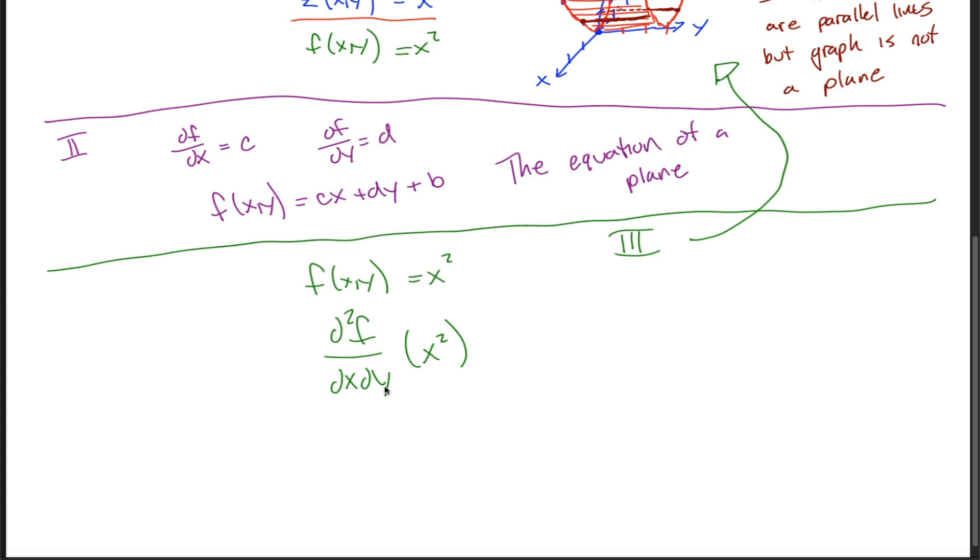we first take the derivative with respect to y. With respect to y, x is just a constant. The derivative of a constant is just equal to zero, so I'd get the derivative of f with respect to x of zero, which is clearly equal to zero. Now we go in the other direction. First, take the partial derivative with respect to x. The derivative of x squared with respect to x is 2x, so I have to take the derivative with respect to y of that 2x. With respect to y, 2x is just a constant. Again, the derivative of a constant is just equal to zero.